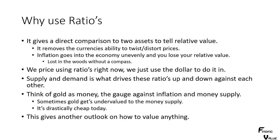You need to think of gold as money — it's the gauge against inflation and the money supply. Sometimes in history, gold gets undervalued in relationship to the money supply, and right now it is drastically cheap to the money supply. This gives us another outlook on how to value anything — homes to gold ratio, for example. That's how everyone actually prices things in life; we just use an unreliable currency. You should use the ratio of gold or real money to get a crystal clear picture of the valuation of everything.